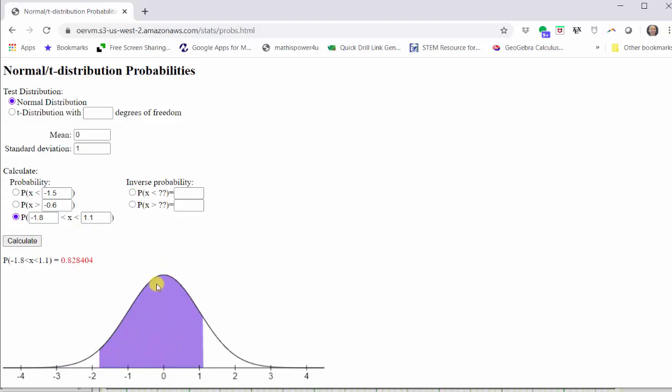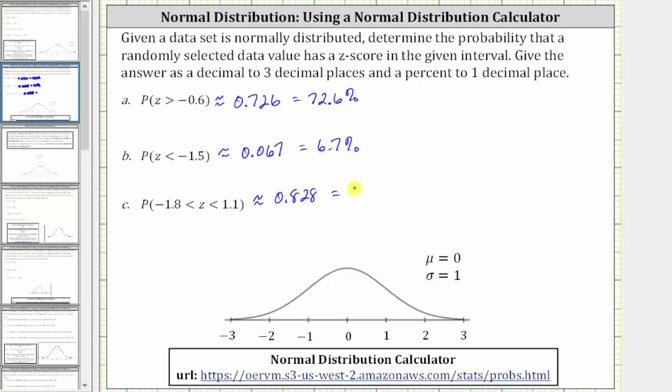Again, notice how the area below the curve between the z-scores of negative 1.8 and 1.1 is shaded. This area represents the probability. The z-score is between negative 1.8 and 1.1, which to three decimal places is approximately 0.828, which is equal to 82.8%.